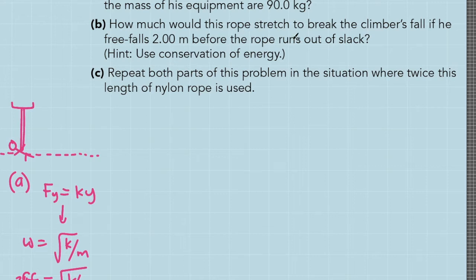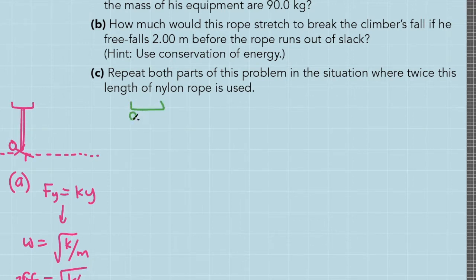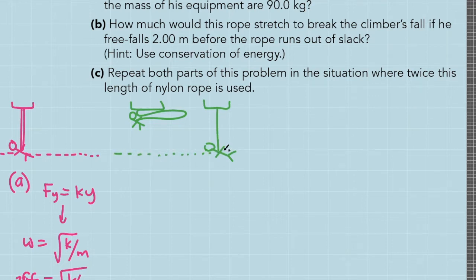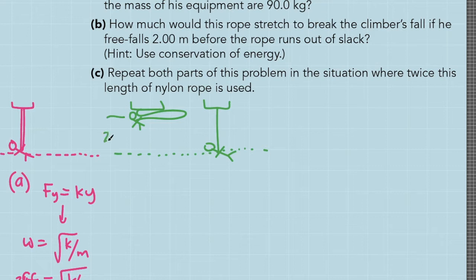In part B, how much would this rope stretch to break the climber's fall if he free falls 2.0 meters before the rope runs out of slack? Let's redraw the system with the ceiling, the climber, and the unstretched rope at its equilibrium position. The rope still has slack — it is neither stretched nor compressed. The mountain climber experiences free fall for 2.0 meters before this condition. If the climber is in free fall, the only force acting is gravity, so the rope is not exerting force. We'll use conservation of energy to solve part B.